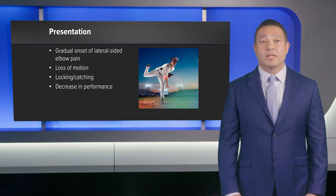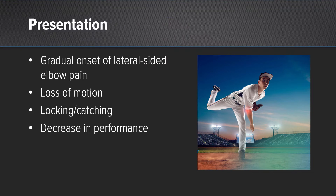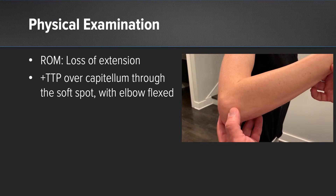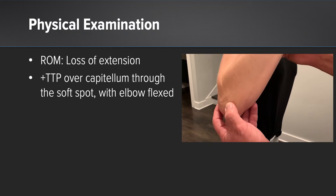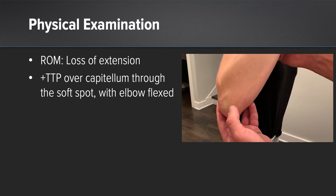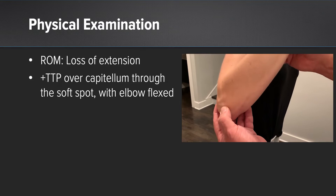On presentation, the patient has a gradual onset of lateral-sided elbow pain. There's loss of motion, especially in extension, that could be locking or catching if there's a loose body, and there's decrease in their performance over time. On examination, I check the range of motion to see if they have a flexion contracture, and also tenderness to palpation over the capitellum through the soft spot with the elbow flexed.